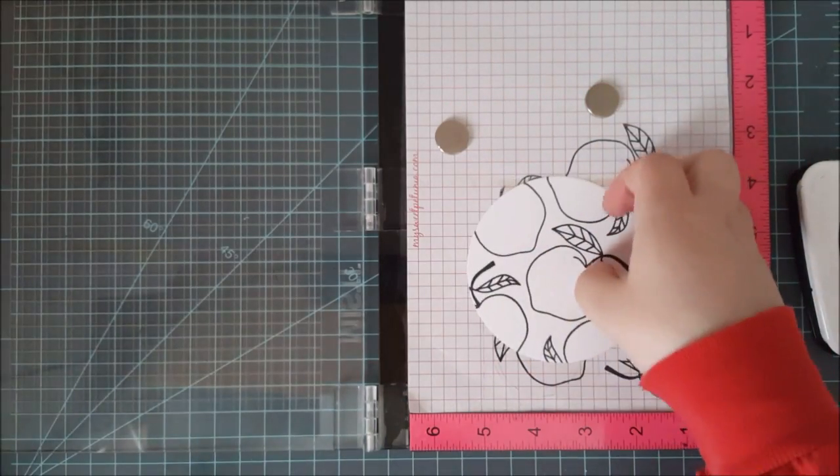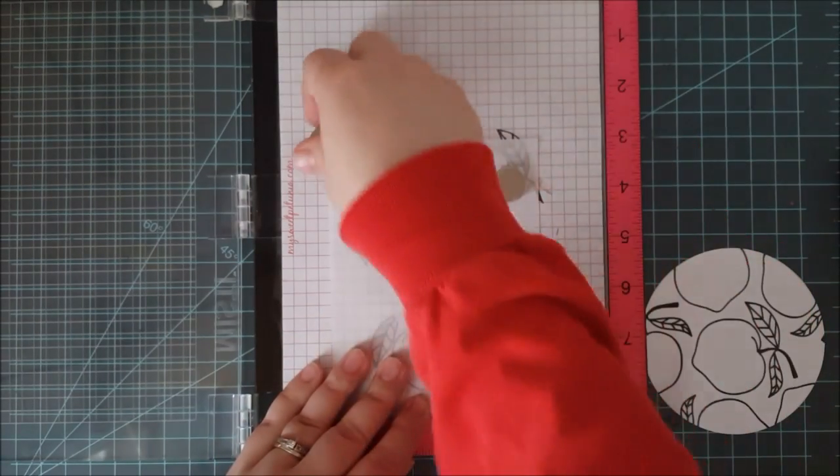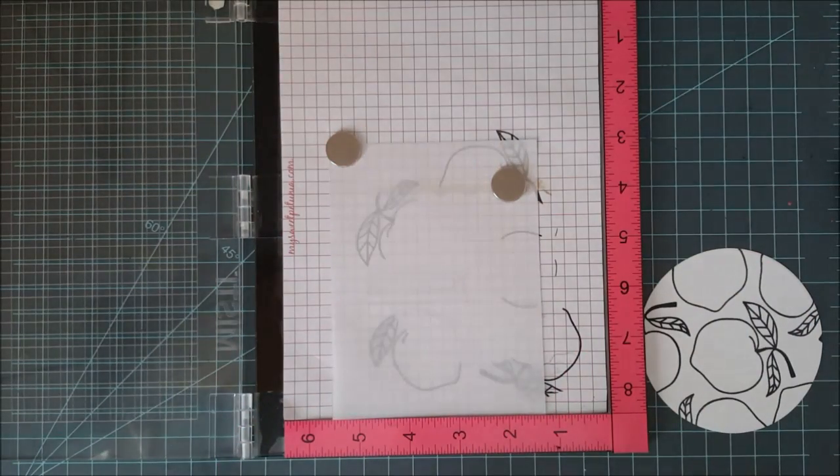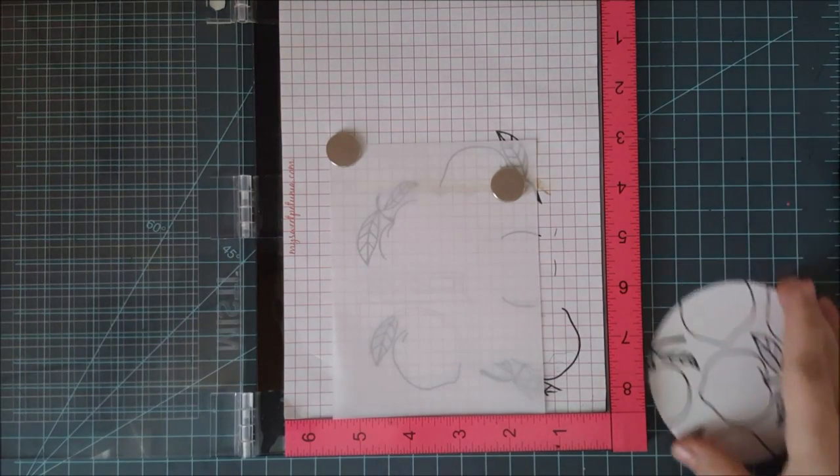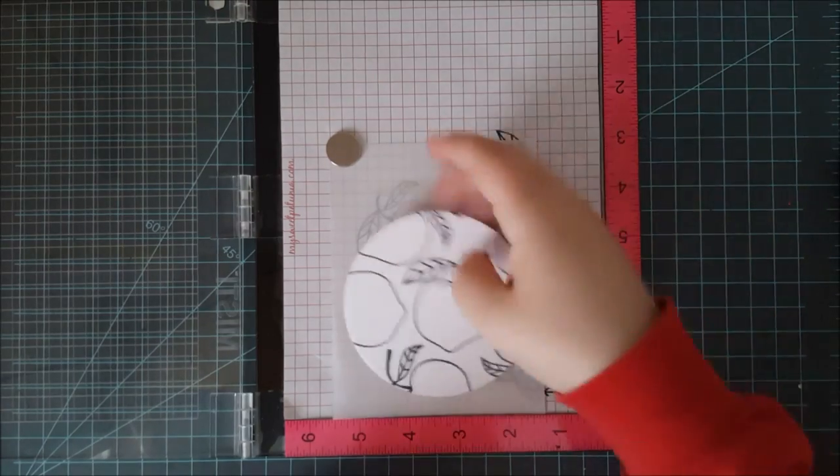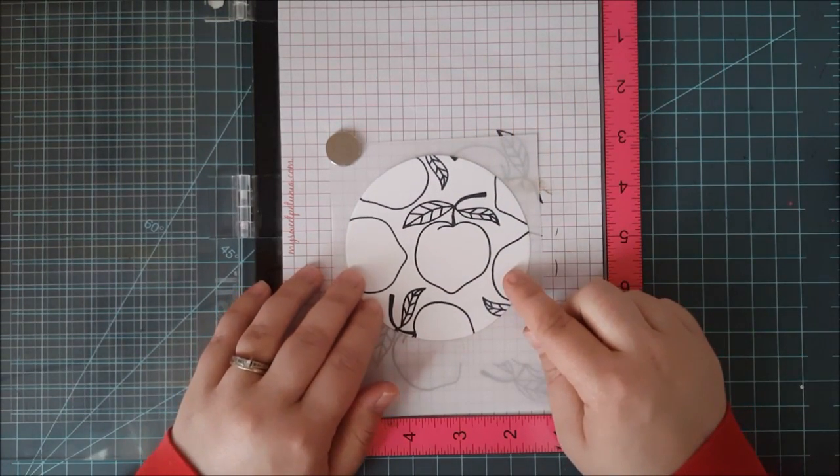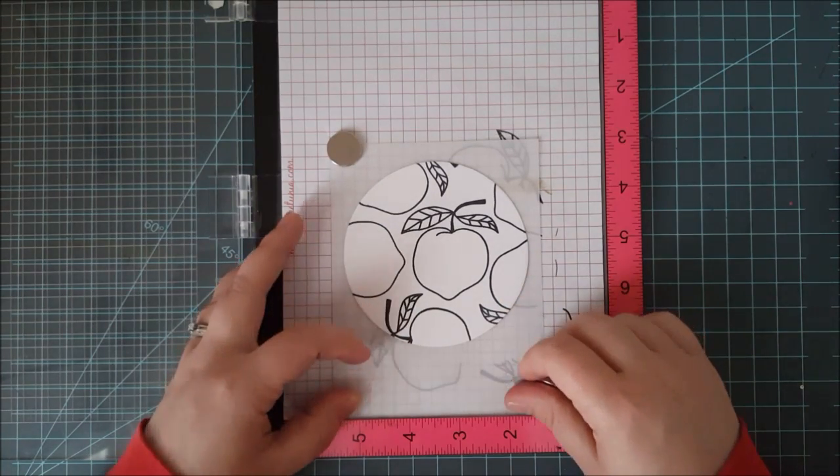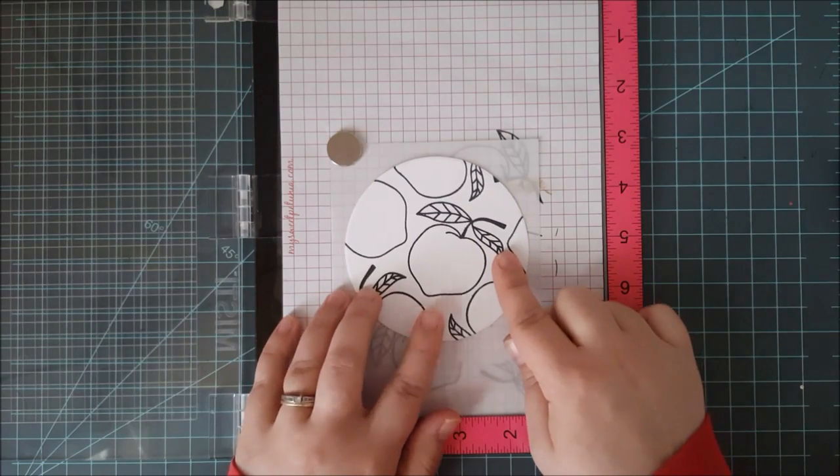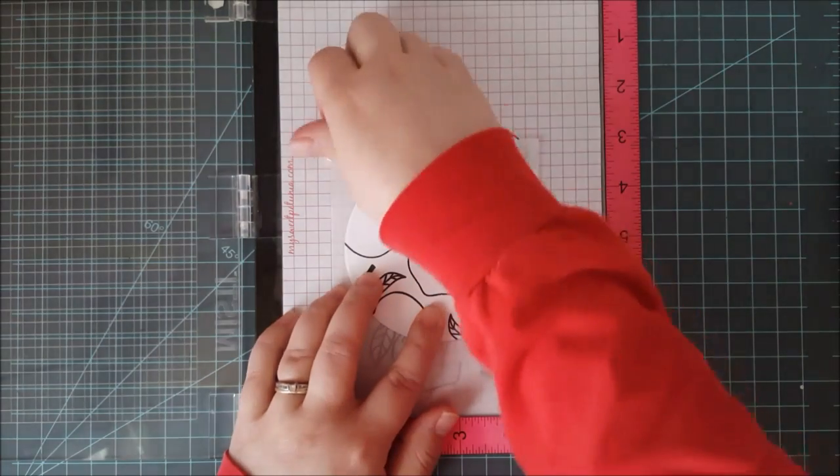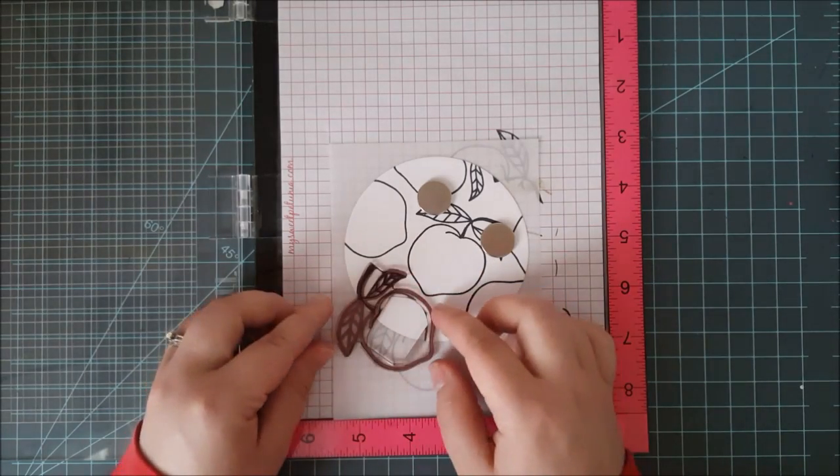Now comes the actual technique part of this. I'm bringing in a vellum card base that I made myself. It's just a piece of vellum cardstock that was 8.5 by 11 inches. I cut it in half at 4.25 and then I scored it at 5.5 inches just to make an A2 card base. I'll bring in that white circle that I stamped before and I want to make sure that peach that is right in the center is orientated the way I want it because this is going to hold my sentiment in the end.